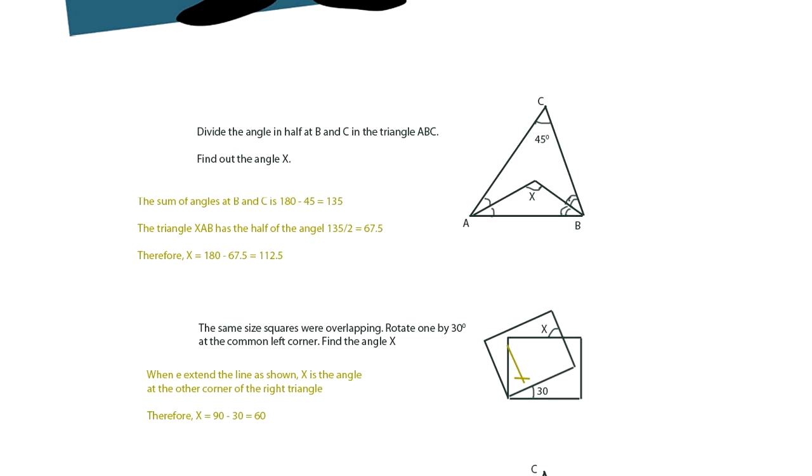Divide the angle in half at B and C in the triangle ABC. So here what is said is B and C, or probably this is A. It's a half. Find out X. And this 45 is given, right?